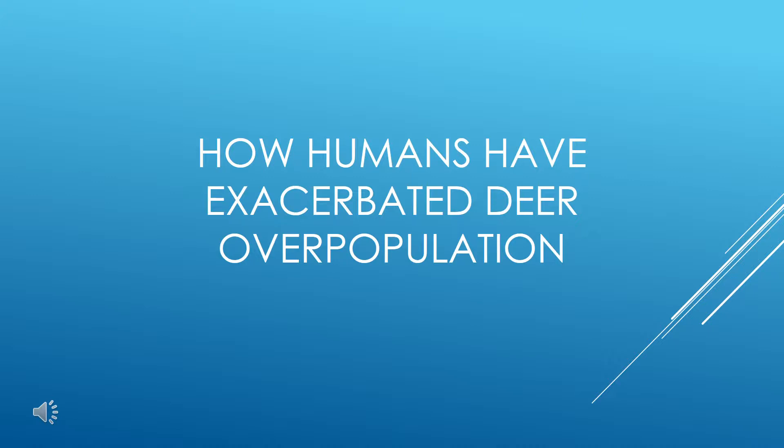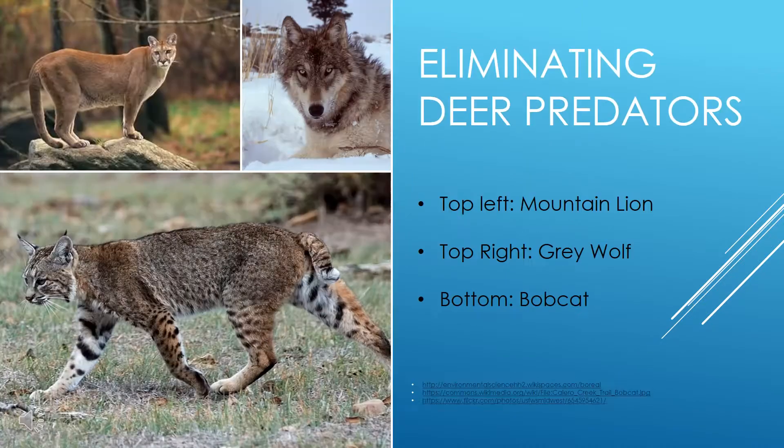I will first be examining the ways in which human interventions have exacerbated this issue. The first factor that has led to an increase in deer population is the elimination of deer predators. Some of these predators include the gray wolf, the mountain lion, and the bobcat.